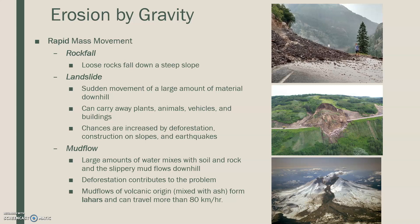A landslide is a sudden movement of a large amount of material downhill. If it's just rocks, it's a rockfall; if it's land — dirt, trees, soil — it's a landslide. It can carry anything in its path: trees, animals, plants, vehicles, and buildings. Landslides often happen on the west coast during heavy rain — some fancy mansions in Malibu, California fall off cliffs because of them. Chances of landslides increase due to deforestation, construction on steep slopes, or earthquakes, which often trigger them in California. Earthquakes mixed with loose soil triggers disaster.